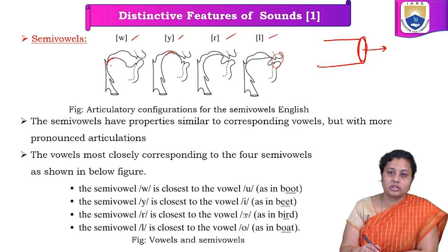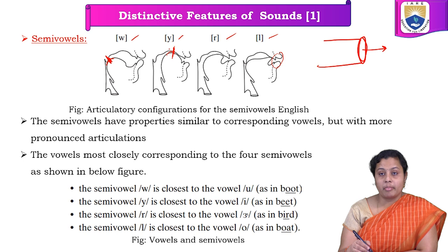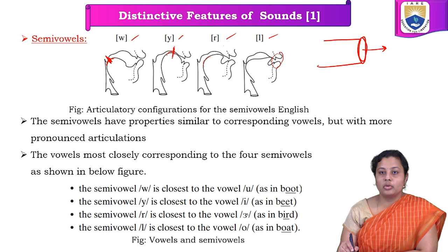For example, when saying 'v,' the tongue is placed at the back end of the palate — the top back end palate. When saying 'ya,' the tongue tip is touching the upper palate. When saying 'la,' it is touching both the upper palate and the back palate.